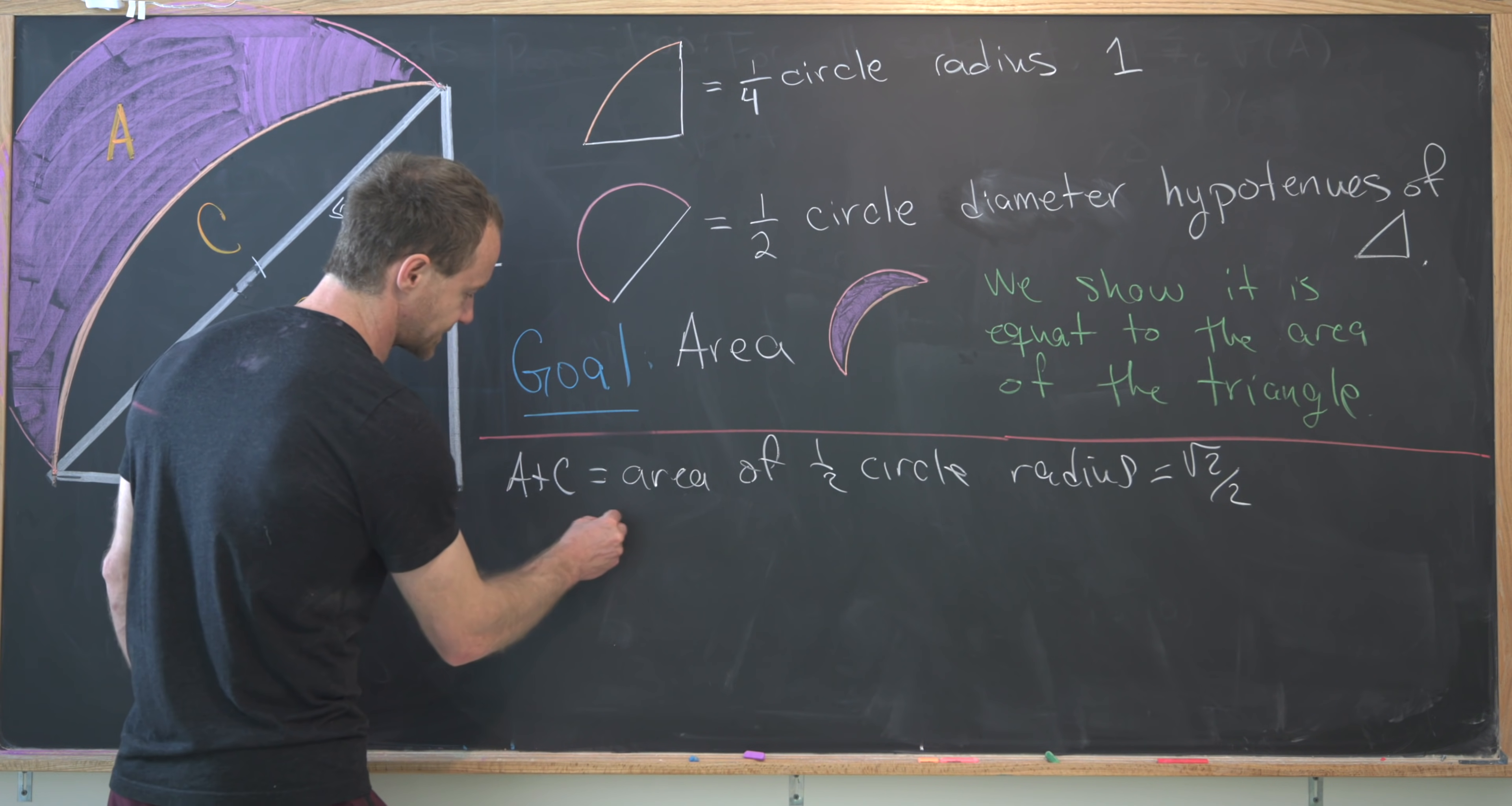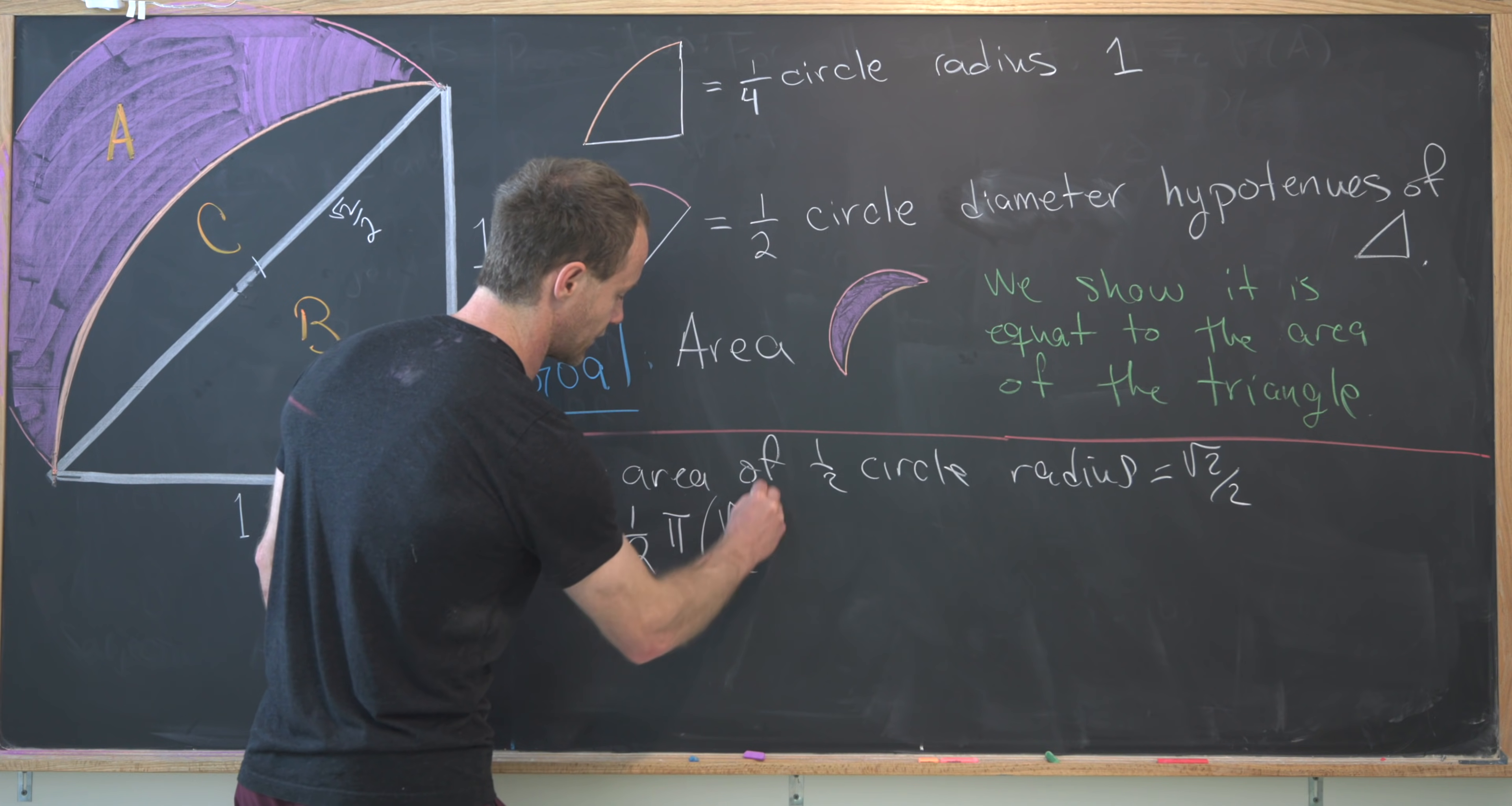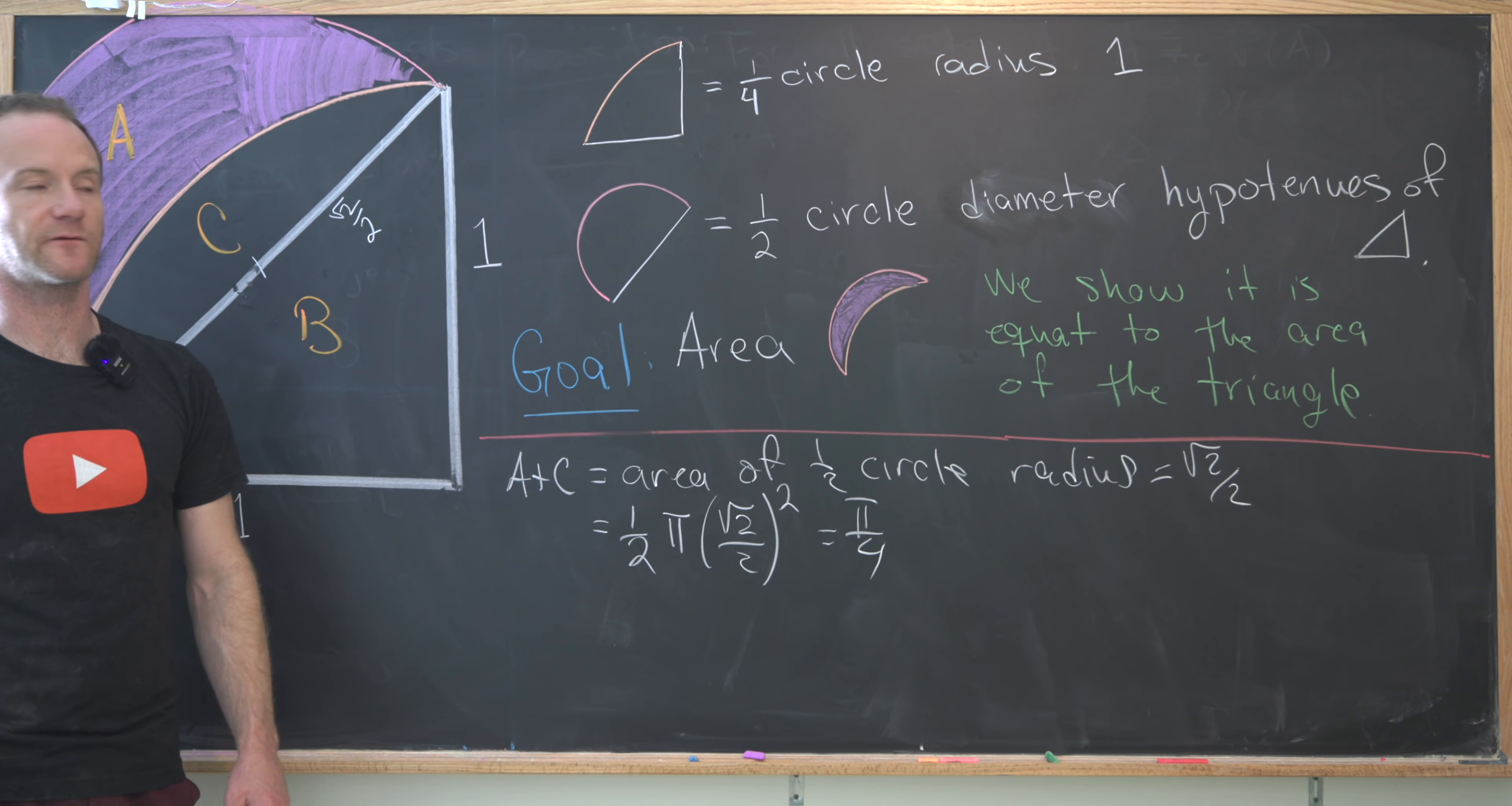But now since we've got half of a circle, we need to include a half. And then we'll use the standard formula for the area of a circle. So that's going to be pi times the radius squared. So that'll be square root of two over two squared. So if we were to calculate that out, we would get pi over four. So in other words, A plus C equals pi over four.